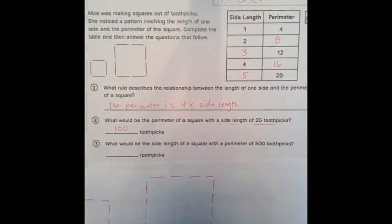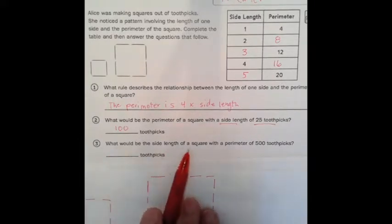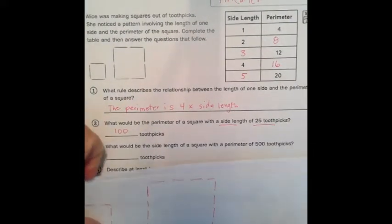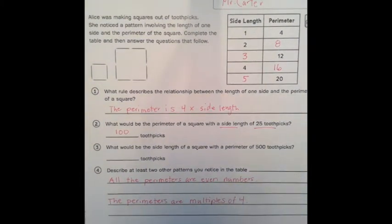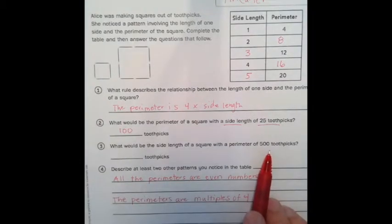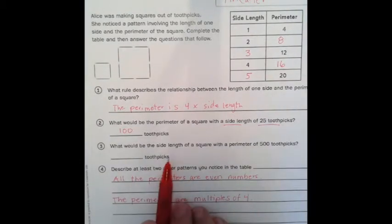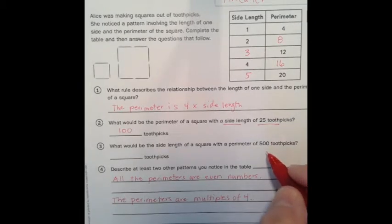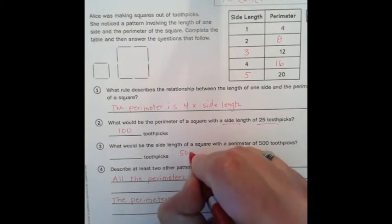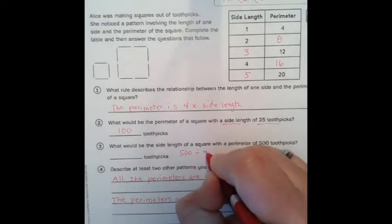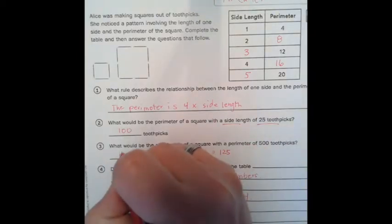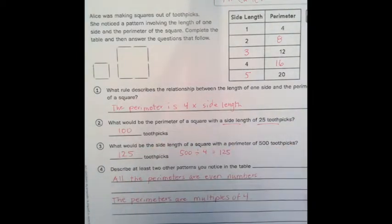So now for number three, it's asking you, what would be the side length of a square with a perimeter of 500 toothpicks? So now it's asking you the opposite. So you're given the perimeter, and now you've got to figure out the side length. So what you would do is you would go 500 divided by 4, and that would equal 125.